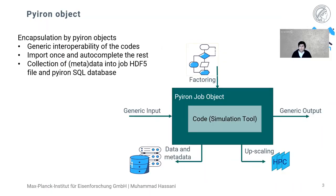There are several components in Pyron which enable these features. One is the Pyron job objects. It encapsulates the simulation tool, and the user interacts only with this job object, giving generic input. The Pyron object translates the generic input to code-specific input and returns generic output to the user. There is also a refactoring of the simulation tool in the Pyron object. At the end of the simulation, metadata is stored in a central SQL database and the data itself is stored in the job HDF5 file.